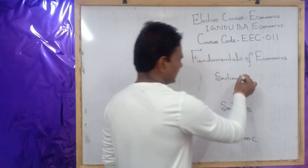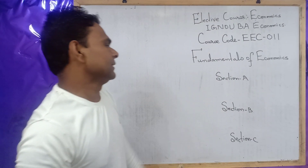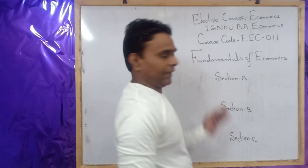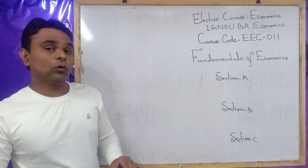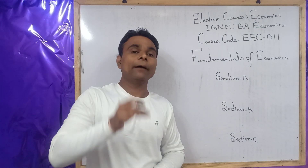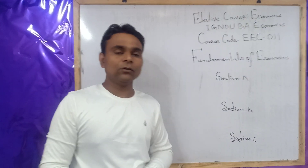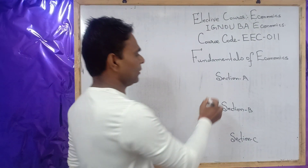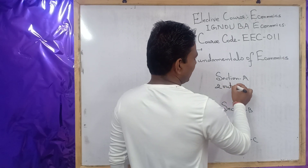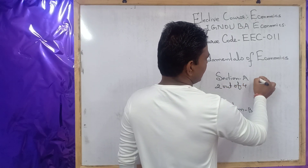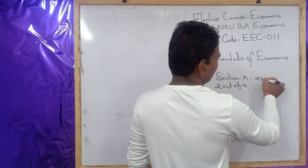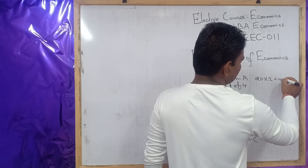I will start from Section A. In Section A, there are 4 questions given, in which you have to answer only 2 questions out of 4. Each question carries 20 marks — 20 into 2, that is 40 marks.